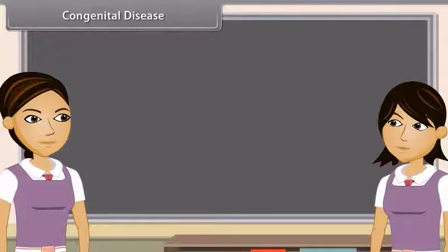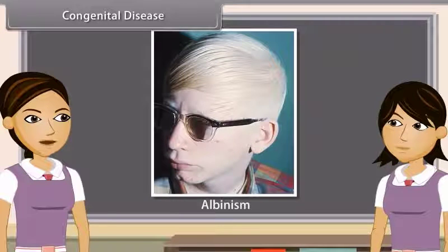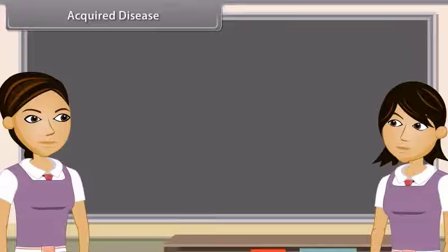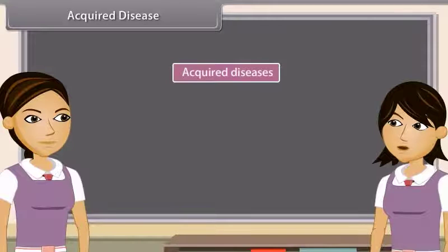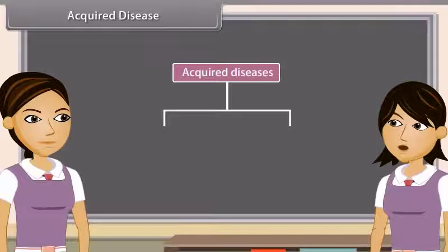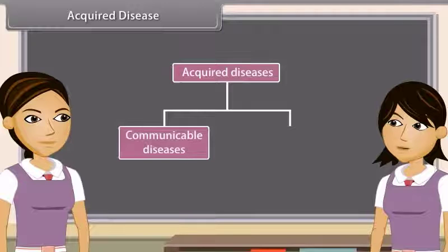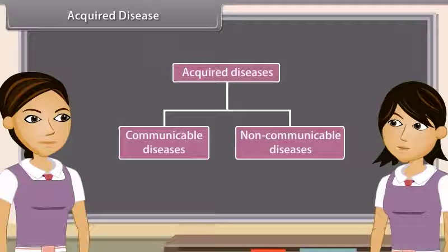Congenital diseases are those which are present since birth — for example, albinism, haemophilia. Acquired diseases occur only after birth and hence they are non-inherited. But acquired diseases are of two types: communicable diseases and non-communicable diseases — for example, influenza.